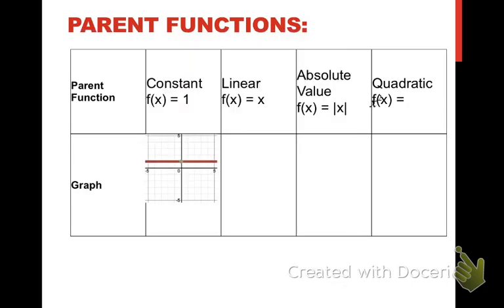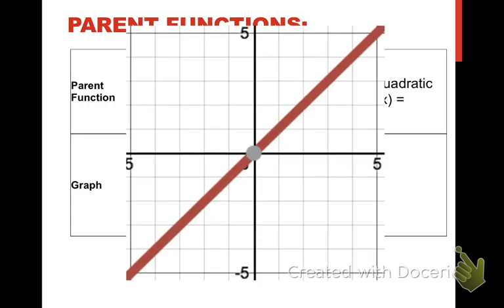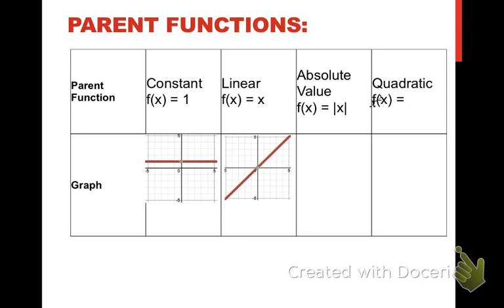Next is our linear function, which you should be familiar with. Linear is in the form y = mx + b usually. The m and the b are transformations. So just the basic form is going to be f(x) = x. Here's the graph of a linear function, and some things to note is that its slope is up 1 over 1. So if I ever have you draw a parent function, I'm going to need to see these two points, where you've gone up 1 over 1.